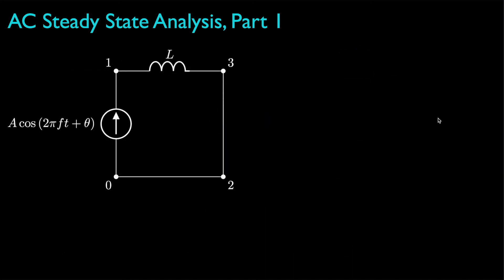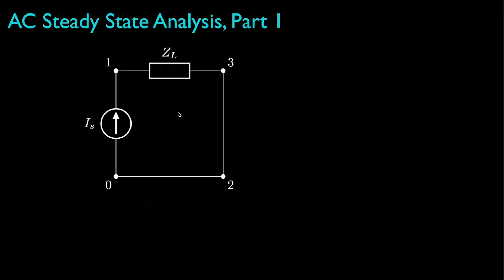As an example, let's suppose we have a simple circuit with an AC current source and an inductor. If we replace the current source by its phasor representation — its amplitude and its phase — and make note of the frequency, we could redraw the circuit like this. Then, if we use the frequency to specify the impedance for the inductor, we could redraw the circuit where the source is specified by the phasor I_S and the inductor is specified by its impedance Z_L. At this point, we can analyze this circuit in exactly the same way we did for DC circuits with sources and resistors, except now the source and inductor are specified by complex values instead of real values.